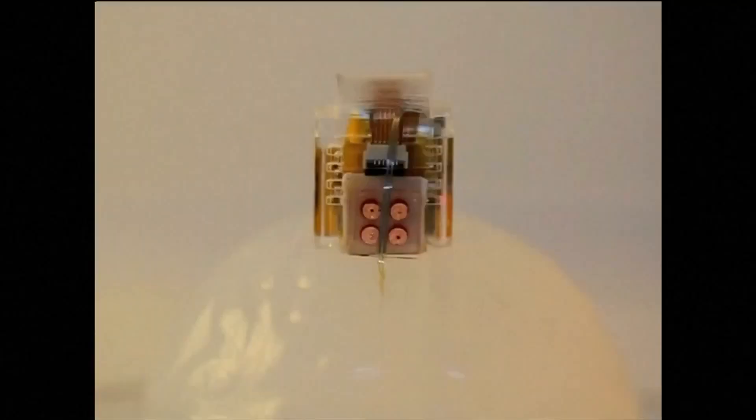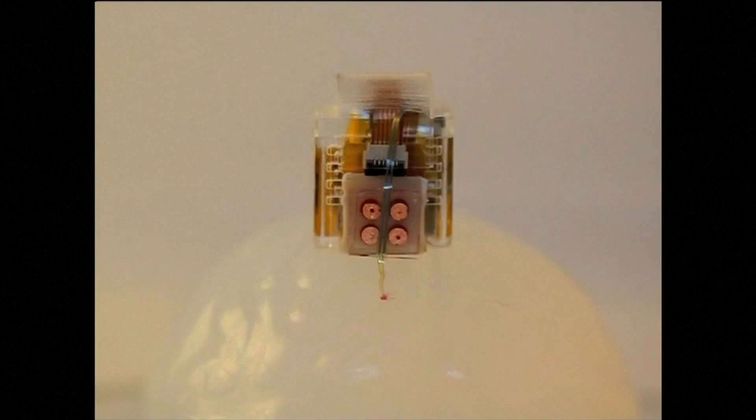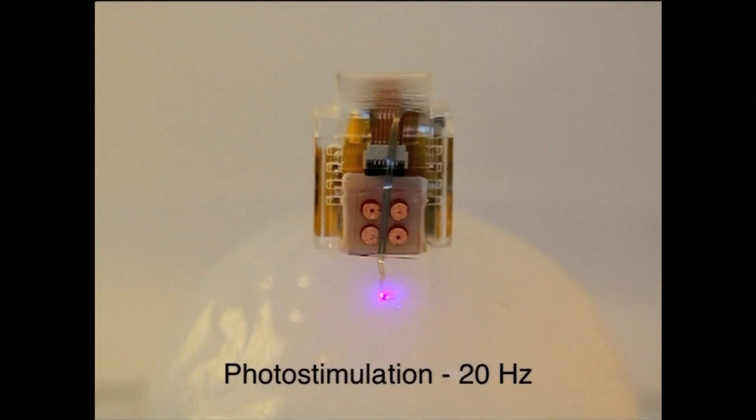The remote control device has an ultra-thin probe, smaller than the width of a human hair, which is implanted into the brain. It's powered by a tiny battery with drugs contained in small reservoirs. Its microfluidic channels can administer drugs, while a tiny LED delivers photostimulation.